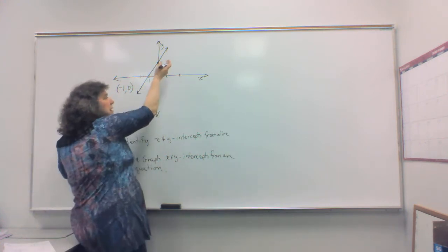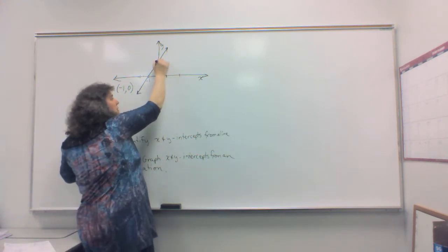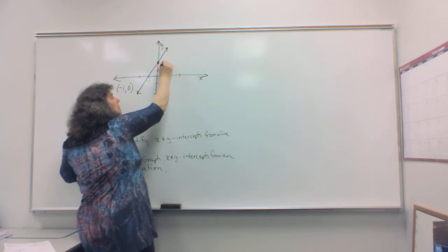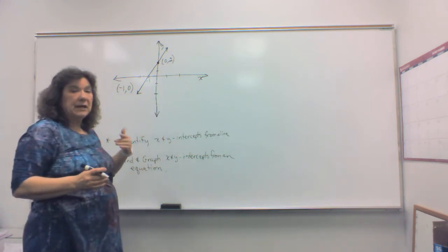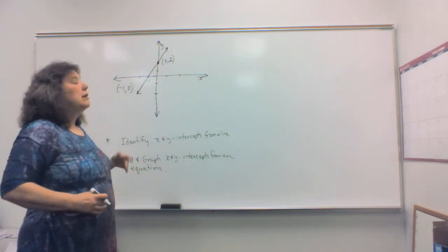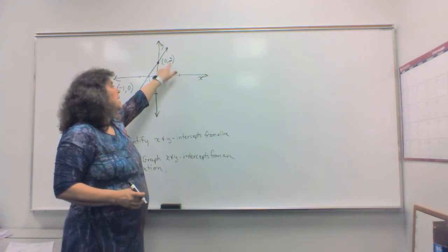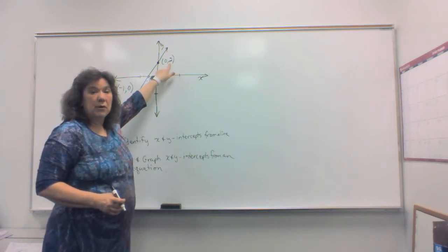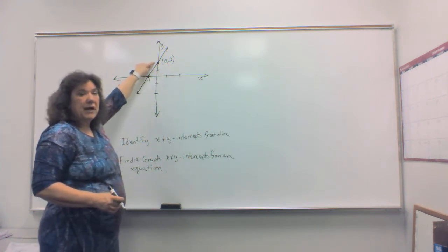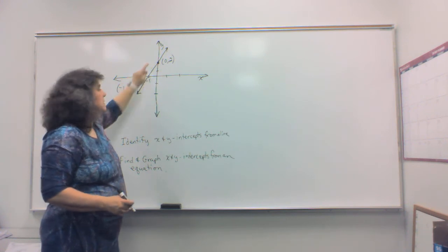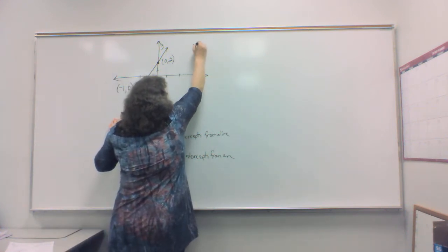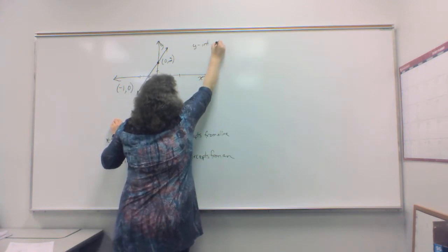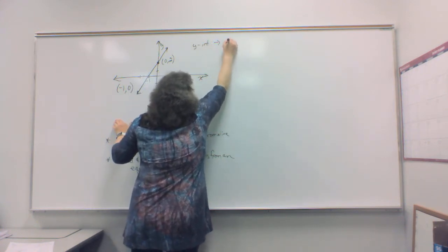And then they will ask you for your y-intercept. Well, this one up here is 1, 2. So this is 0, 2 according to an ordered pair. But again, in your online system, it is simply asking you to give the number of where that line crosses your y-axis.